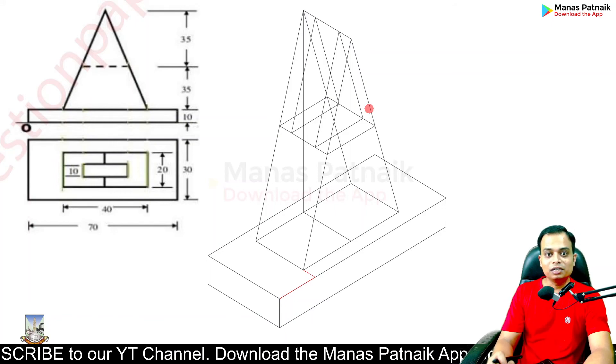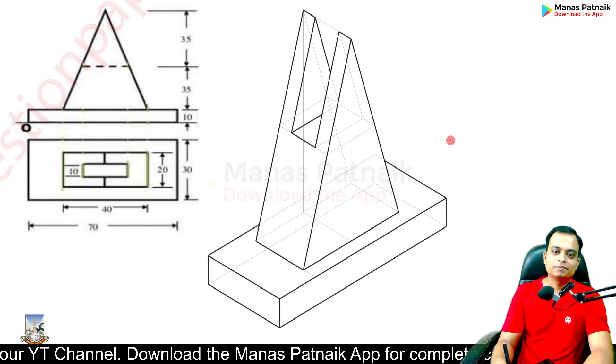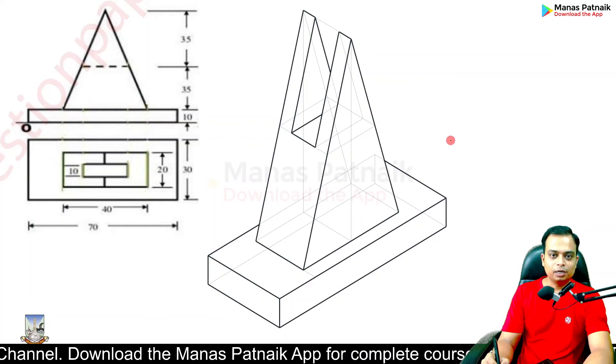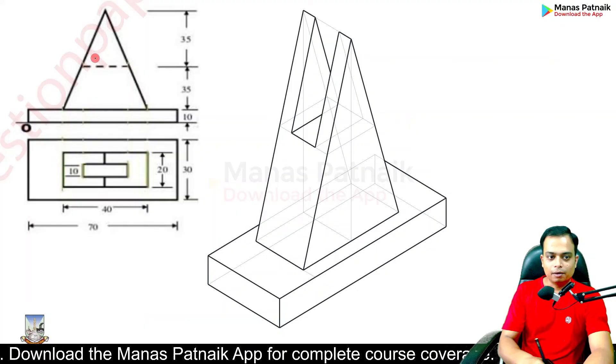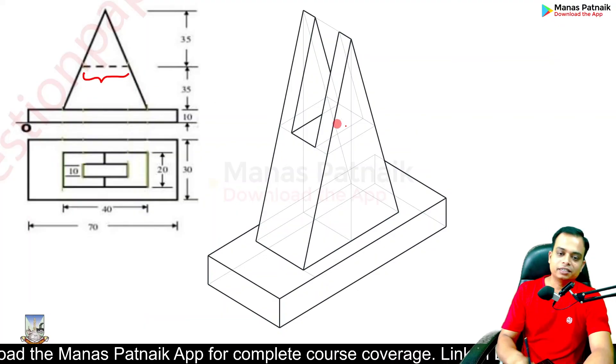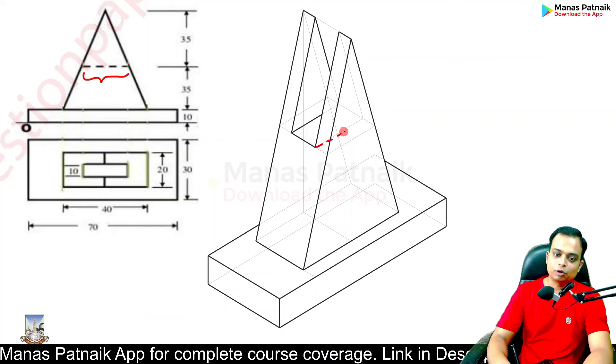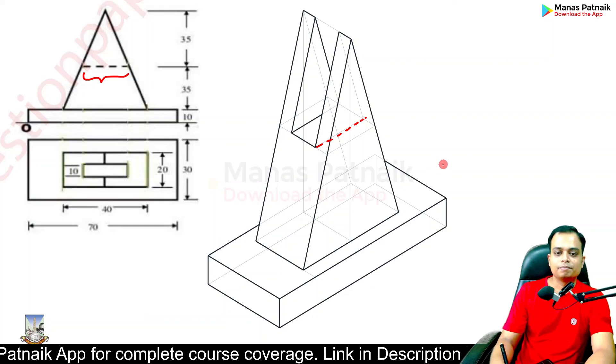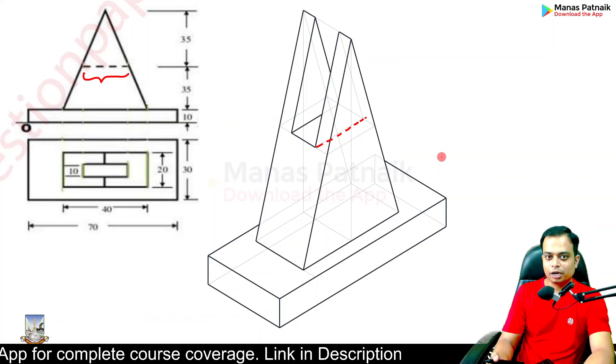The portion which is going to be visible to you is this - this is the portion which will be visible to you. As far as this hidden feature is concerned, this hidden edge, this is that hidden edge I'm talking about. I'm sure you now have a good assessment as to how to go about your task as far as this problem is concerned.